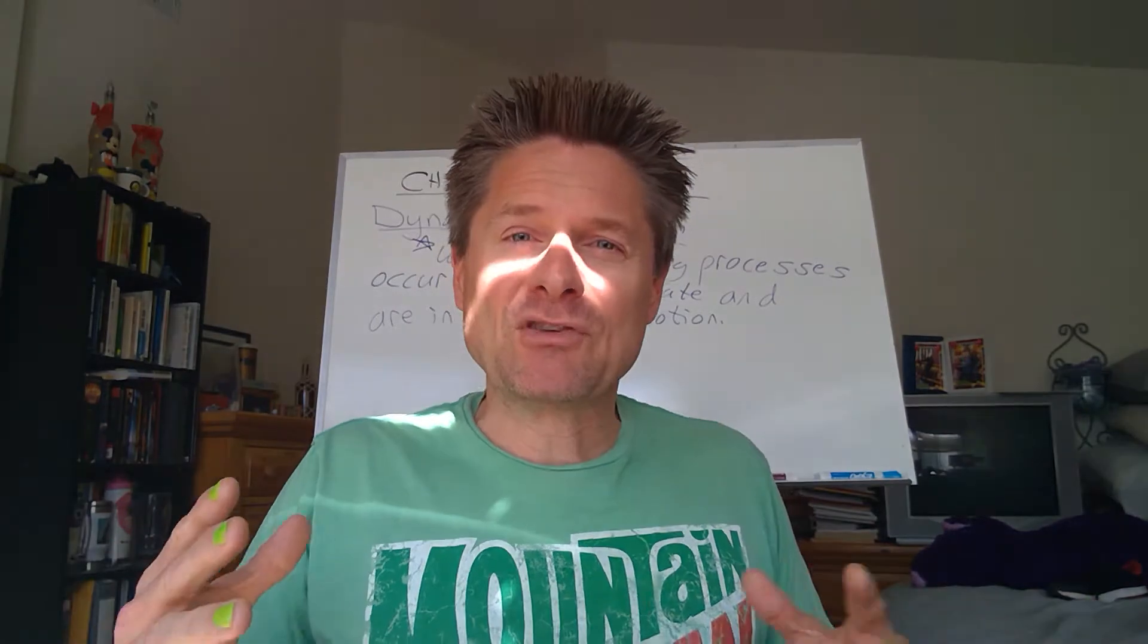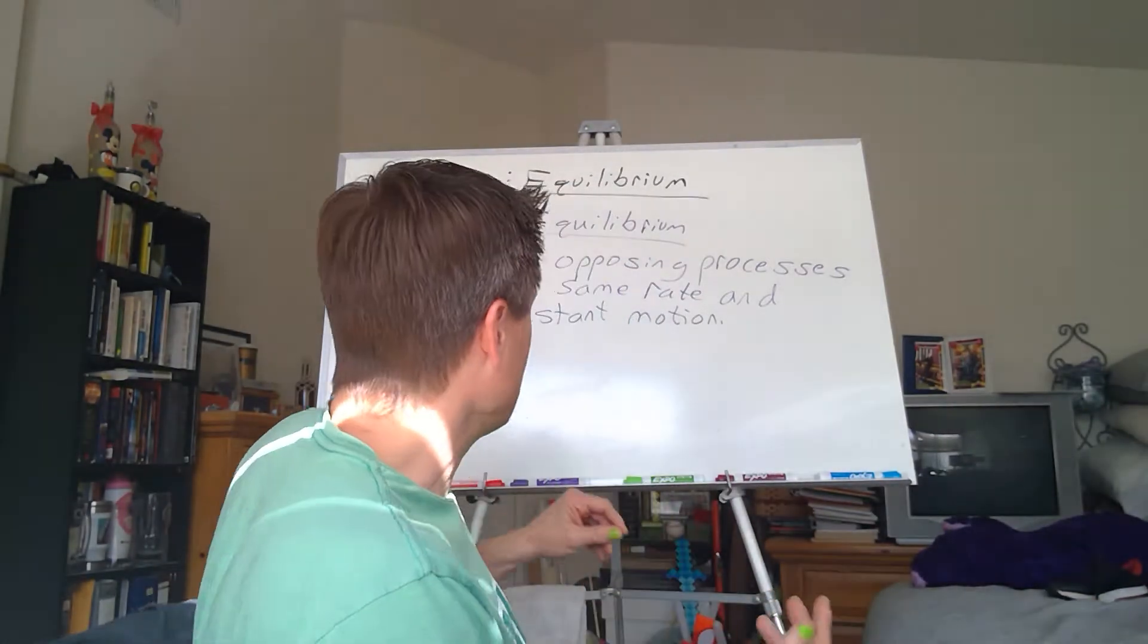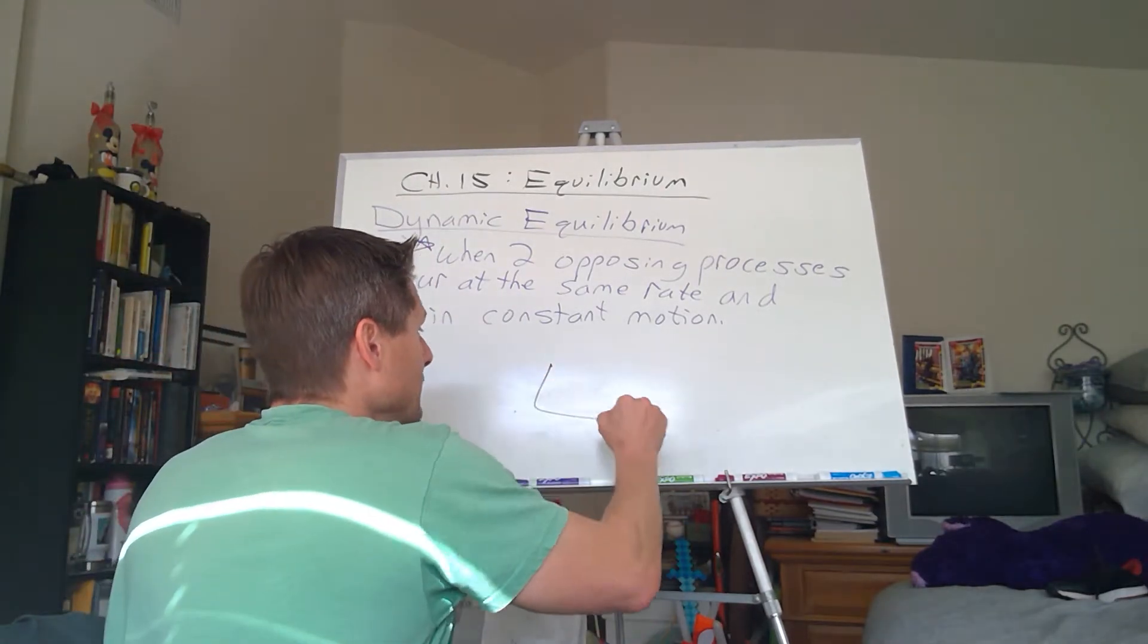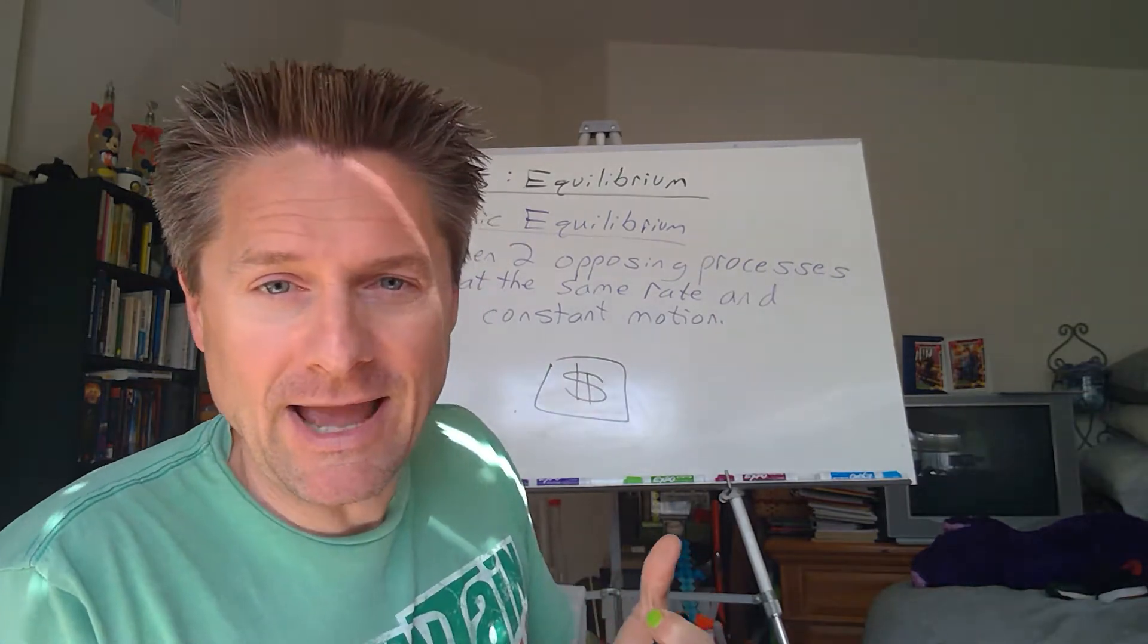My favorite one, I love finances and money and that kind of stuff. So you can look at your bank account. You can look at dynamic equilibrium that way. So imagine your bank account is here. So you've got a certain amount of money in your bank account.